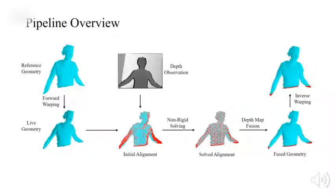After a successful alignment, the depth observation is fused into the live geometry to denoise and complete it, while the reference geometry is updated by inverse warping from the live geometry. Now the pipeline is ready for the next depth input.